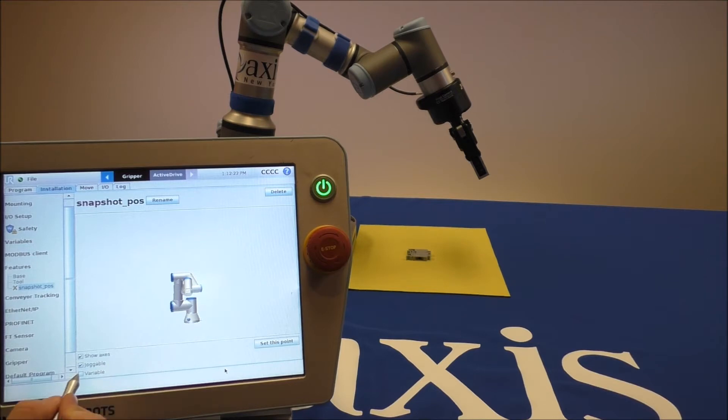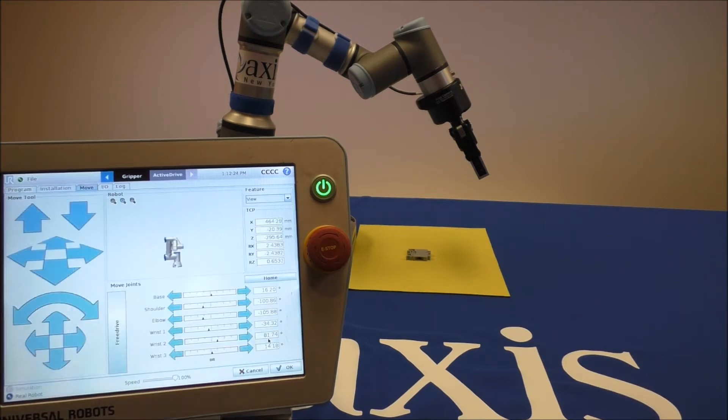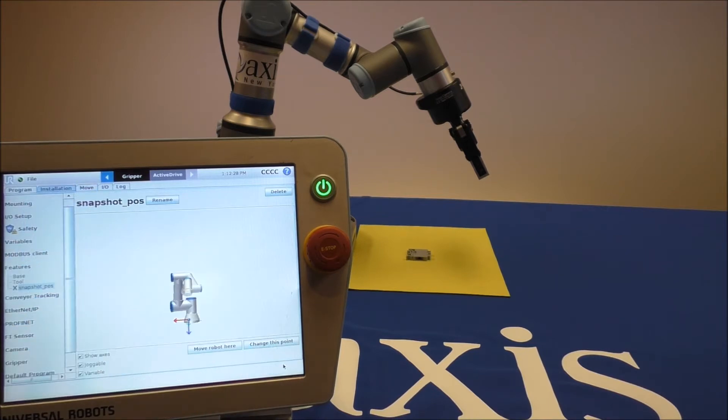We're going to make this a variable point and we're going to set this point. Since it's a variable point, it will get rewritten by the URCap file later on in the program, so it's not completely necessary where it is in space currently.